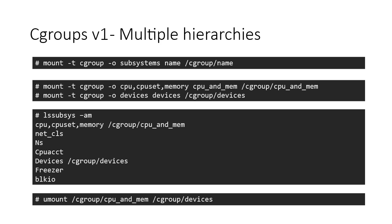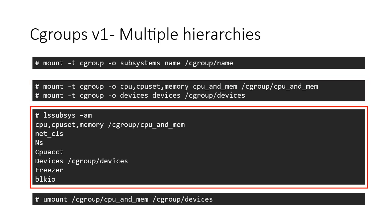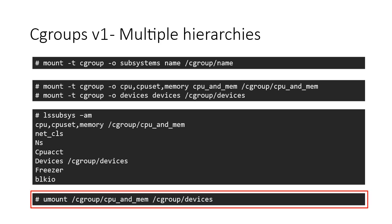So far we have discussed the first version of cgroups, where we can create multiple hierarchies which may be attached to one or more controllers. Each hierarchy has its own virtual file system. In this example, we mounted CPU, CPUset, and memory controllers with a single hierarchy slash cgroup slash devices, and the devices controller in a separate hierarchy slash cgroup slash devices. The lssubsys command shows us the cgroup controllers or subsystems available in the system and their mounted hierarchy locations. Mounted hierarchies can be unmounted by the umount command.